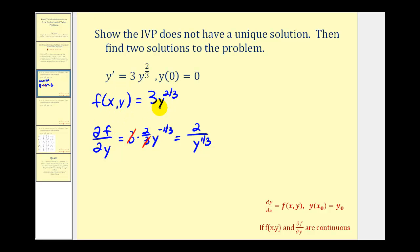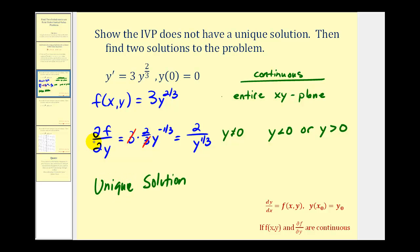Looking at function f, there's no restrictions on y or x, so f is continuous on the entire xy-plane. But looking at the partial derivative, if y was equal to zero, we'd have division by zero. Therefore, this is only continuous when y doesn't equal zero, or when y is less than zero or y is greater than zero. The intersection of these two regions is where our initial value problem would have a unique solution. So we have unique solutions only when y doesn't equal zero, when y is less than zero or when y is greater than zero.